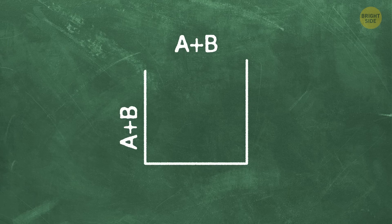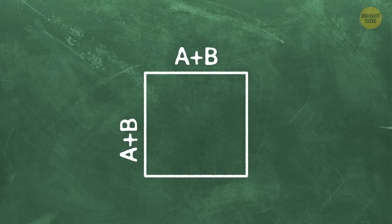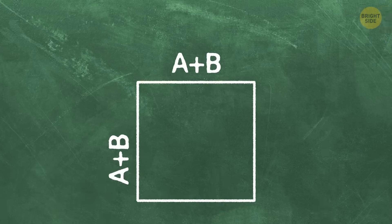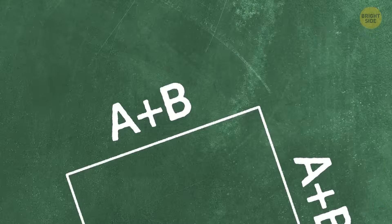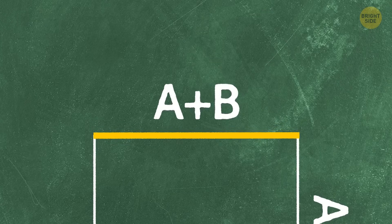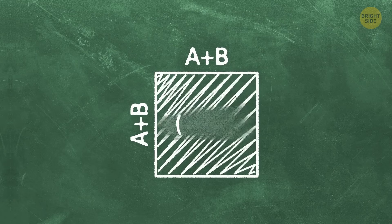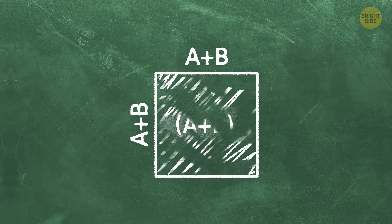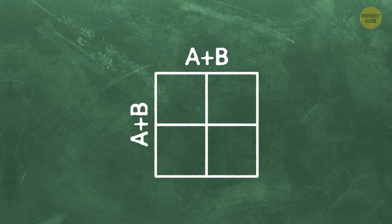Let's have a square with a side a plus b. That's the left part of the formula, right? One side is a plus b, and the other side is a plus b. So, the space of the square is a plus b squared.